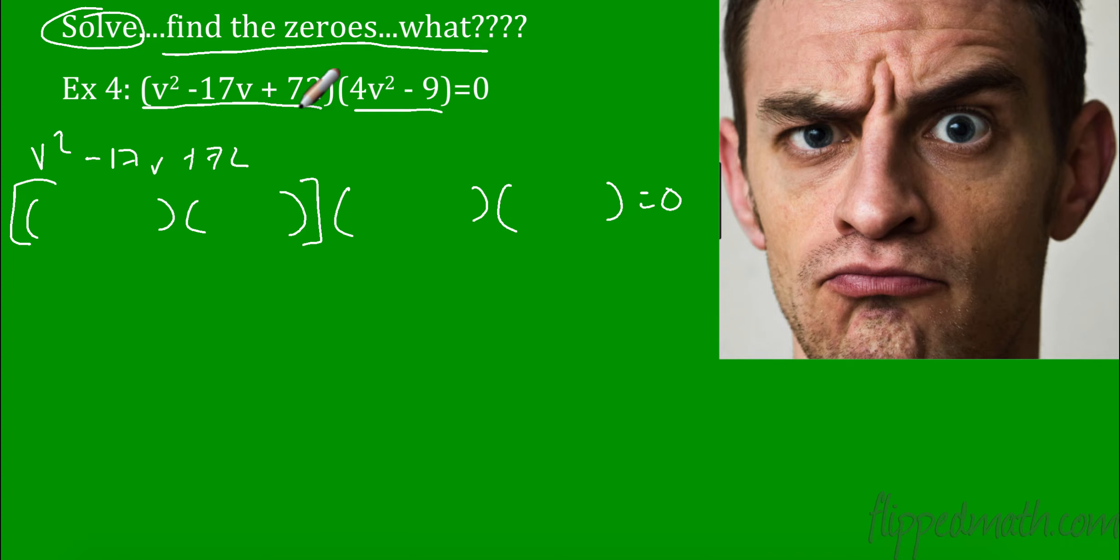So let's take a look at this first one. What are two numbers that multiply to 72 and add to negative 17? There's no leading coefficient, so we know this is going to be a v, and that would be negative 8 and negative 9. This is a difference of squares, so I know the first is going to be 2v, and I know the last is going to be the square root of 9 is 3. So plus and minus 3.